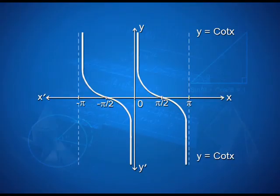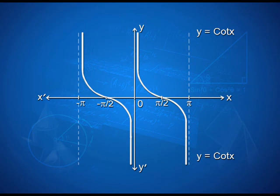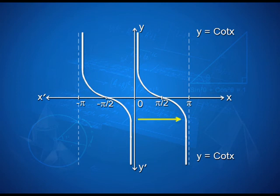Now let us see how the graph of y = cot x looks like. With x'Ox as the x-axis and yOy' as the y-axis, we have intervals from 0 to −pi/2 and −pi on the left-hand side, and pi/2 and pi on the right-hand side.